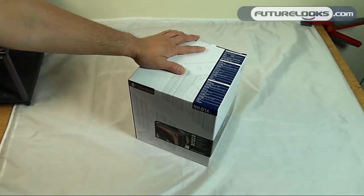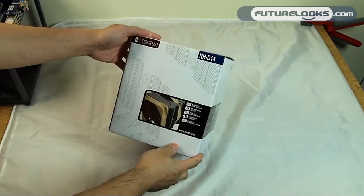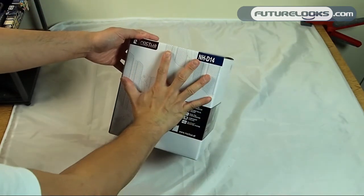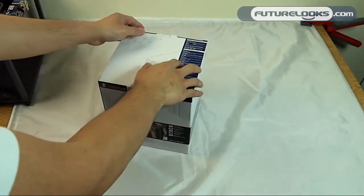So Noctua's NHD14 dual fan dual radiator 6-pipe CPU cooler is a very big cooler in a very big box. As you can see, this is a big box. It's not small by any means. Let's pop it open and see what we get.